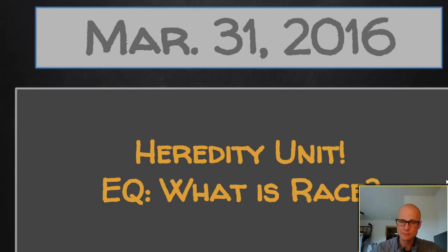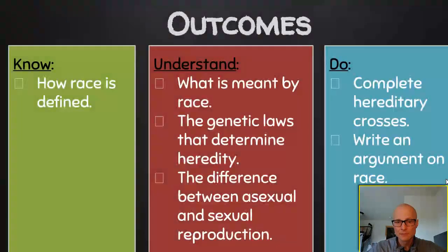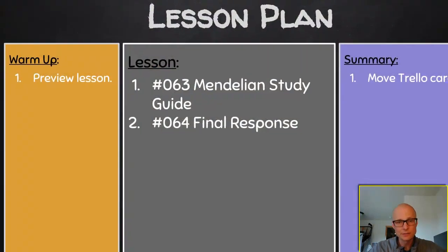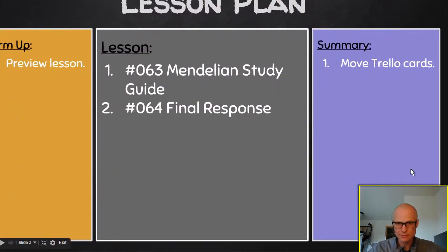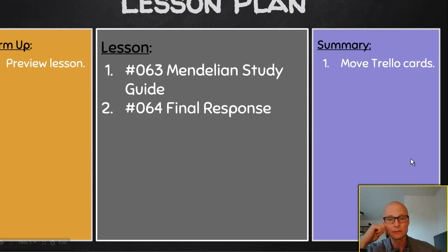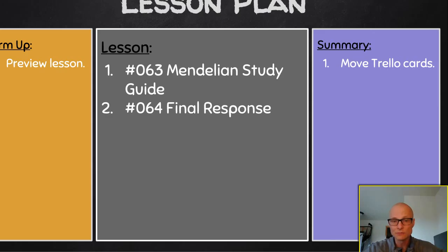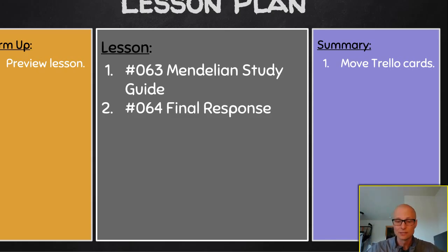Thursday, March 31st. Same plan, moving forward in our unit — number 63. We'll review that in class after we complete it. It's just a study guide over all the things we've been covering so far. Then you should begin your final response. You have one of three questions to choose from — pick one, answer it thoroughly, referencing back to 61 for support. And that's Thursday.